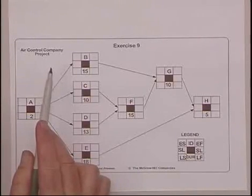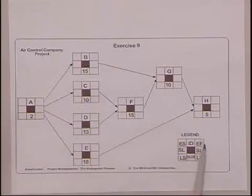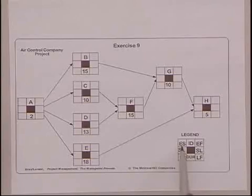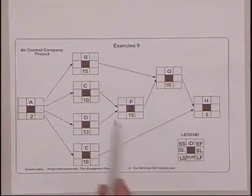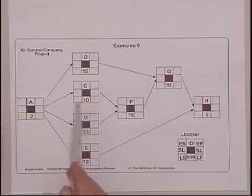The first thing you should do when you look at a diagram like this is review what's on the legend. The legend contains early start, early finish, late start, late finish, duration, slack, and the ID. Right now all we have is the ID and the duration.